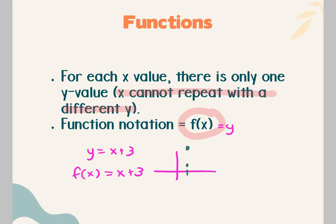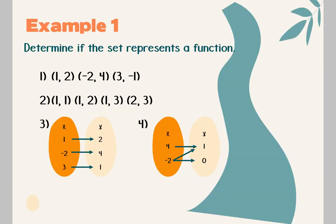You'll see the function test in three ways: is it a function based on coordinate points, based on an equation, or based on a graph? For the points test, if you look at all your x's and none of them repeat, you don't even have to worry about looking at the y's. So if I go to number 1, my x's are 1, negative 2, and 3 — do any of those repeat? No. So this is automatically yes. I don't even have to look at the y's, because the y can repeat. It's just the x that can't.